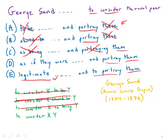Answer D, it turns out, is also a correct construction, but with a very different sense. 'As if they were' implies something contrary to fact. For example, 'my barber knows so much about medicine, I consider him as if he were a doctor' — implying that he's not, in fact, a doctor.